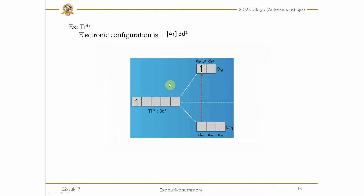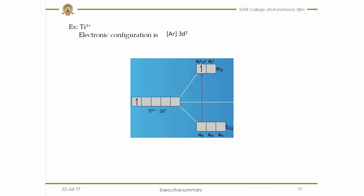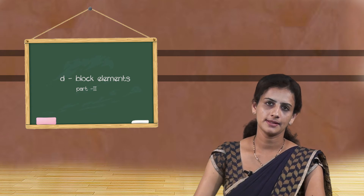In the case of Ti³⁺, there is one electron which can occupy one of the orbitals of the lower energy level, represented as t2g, while the higher energy level is represented as eg. After absorption of radiation, this one electron is excited to the higher energy level, absorbing yellow and green colours from white light. It then returns to the original level with emission of radiation, emitting a purple colour. So the colour of Ti³⁺ is purple. That is how we explain colour formation in transition elements.